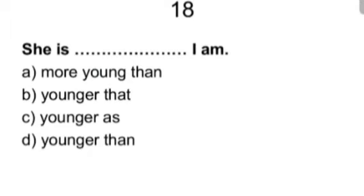Eighteen. She is blank I am. More young than, younger that, younger as, younger than. And the answer is d, younger than. First one is wrong because more young is wrong. Second one, after younger we cannot use that. And younger as, it should have another as before younger. And the last one is pretty correct.